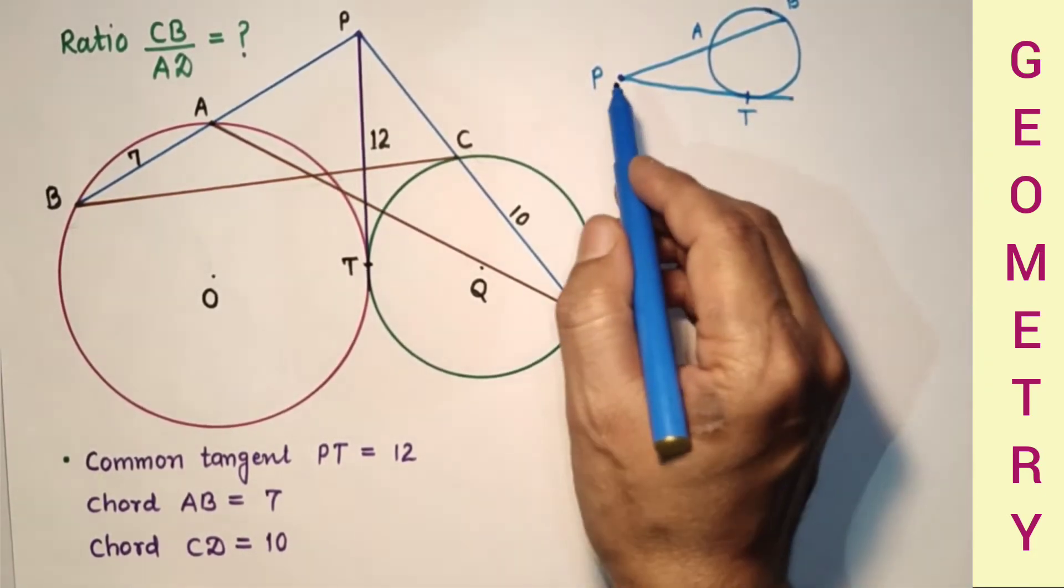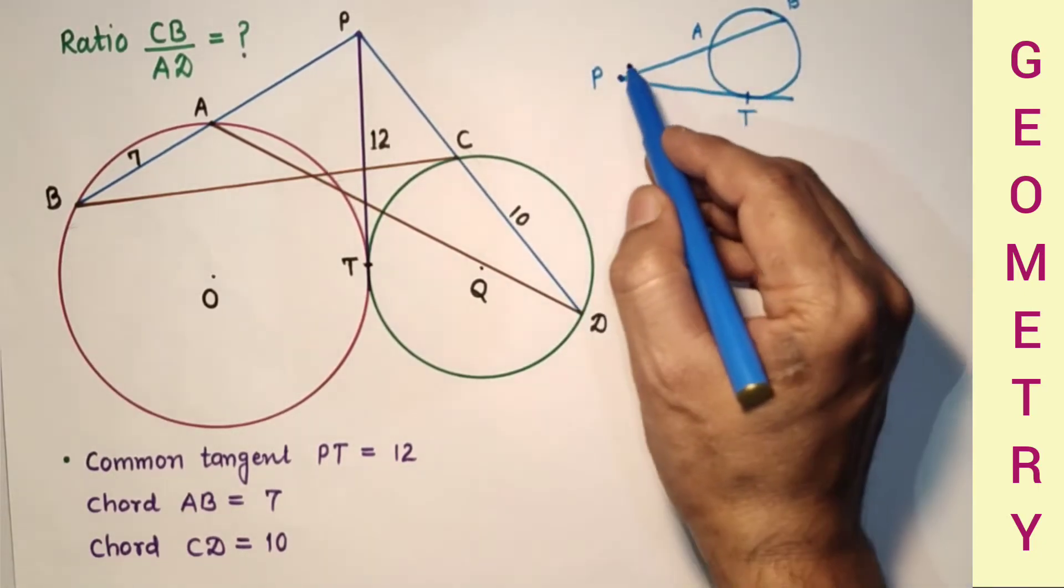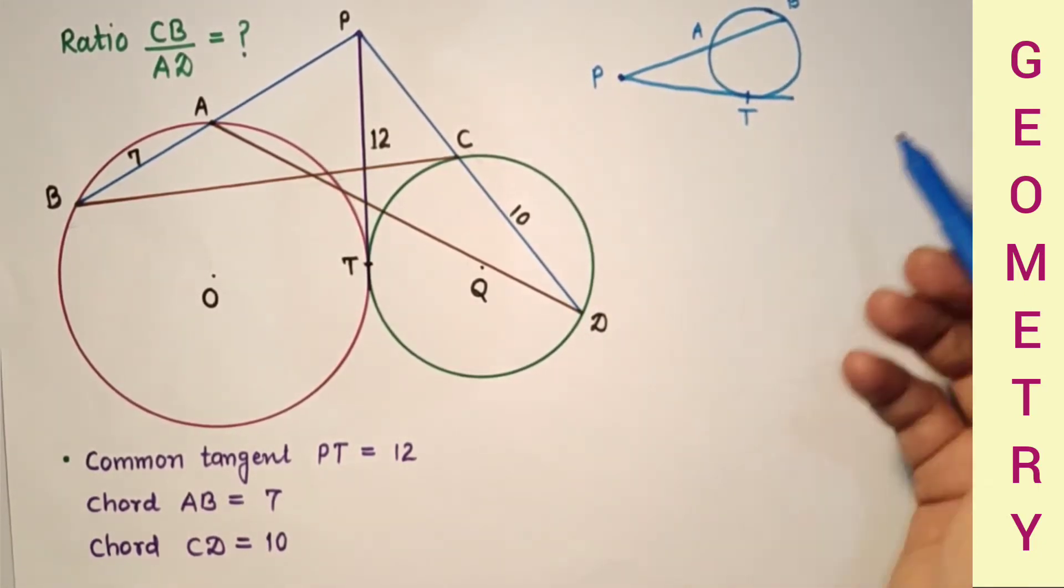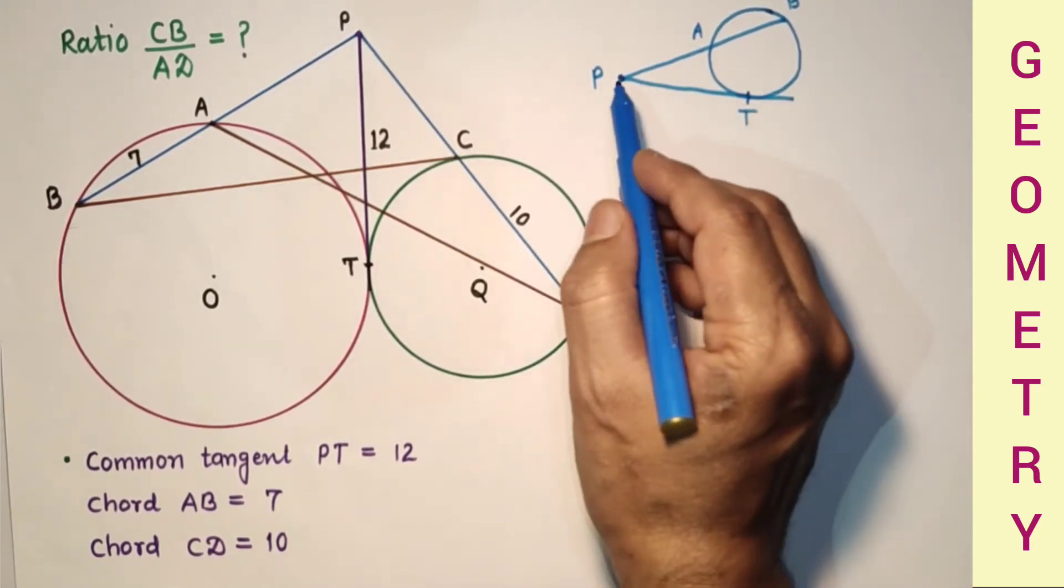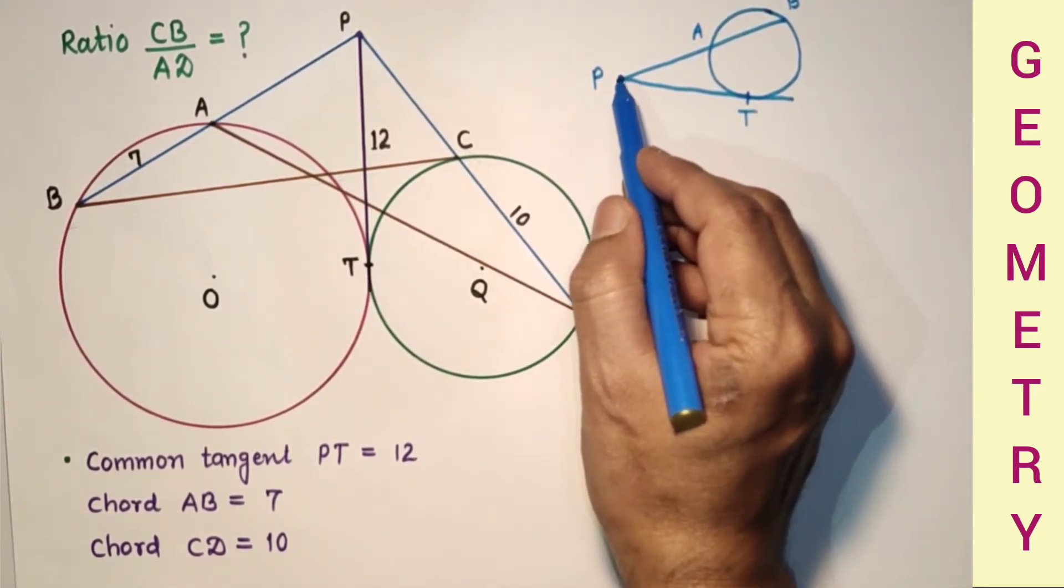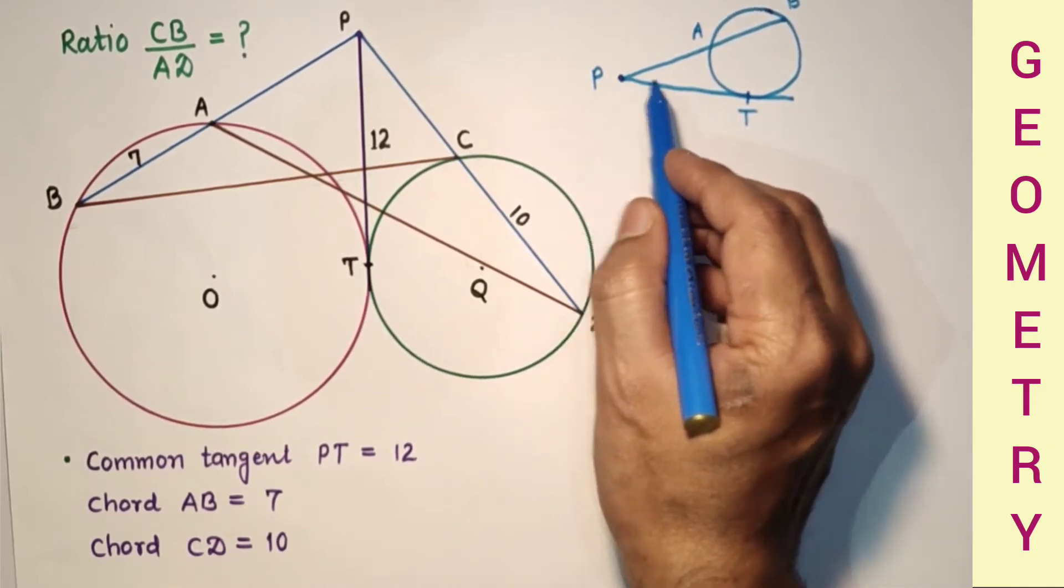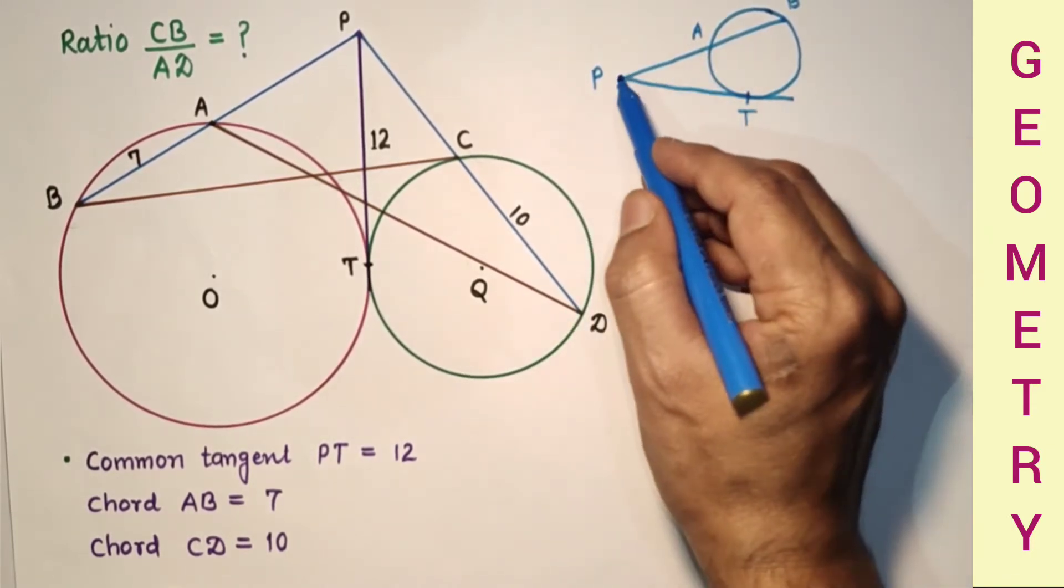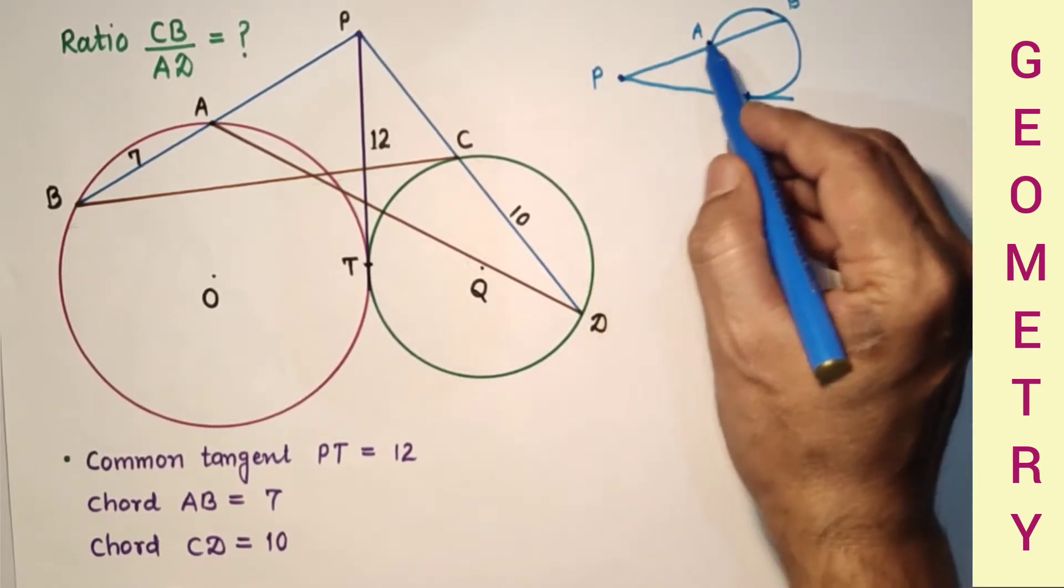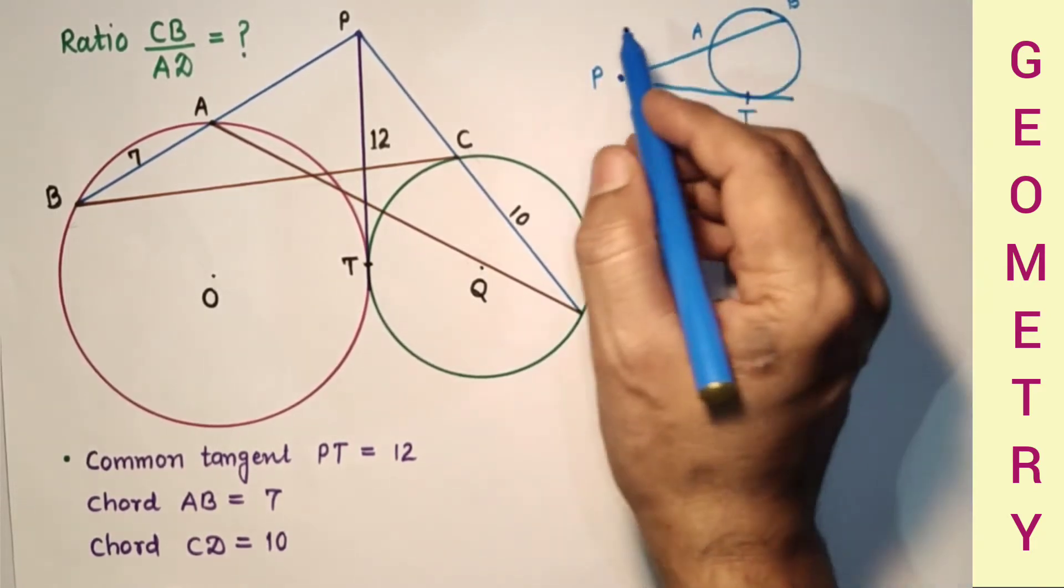By tangent secant theorem, this PT square is equal to PA into PB. To memorize this concept we will use this point four times, start always from point P. PT into PT is equal to PA into PB. So PT square is equal to PA into PB. This is the theorem.